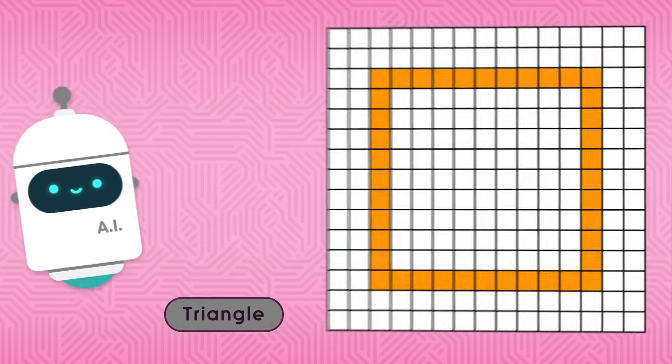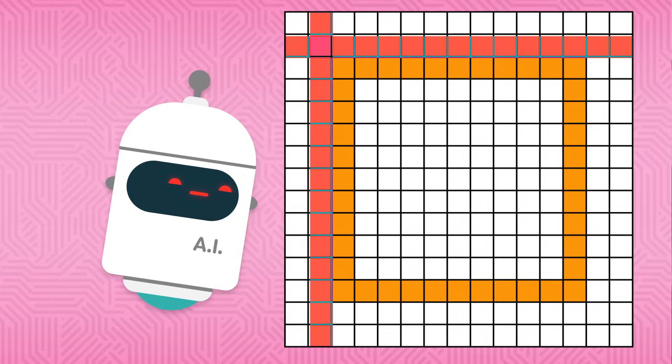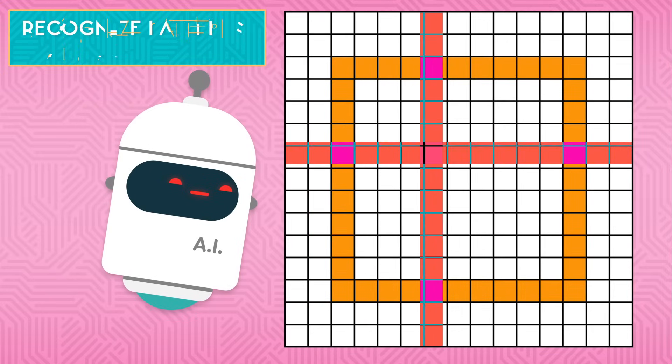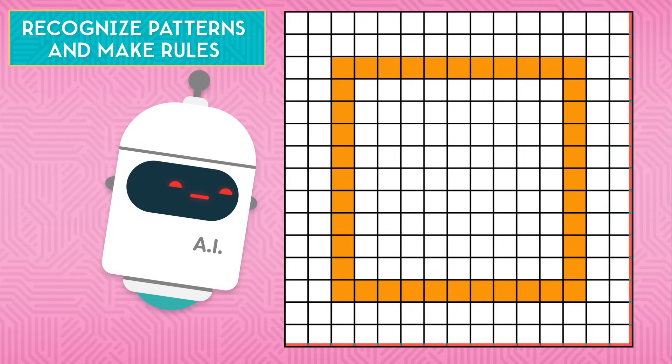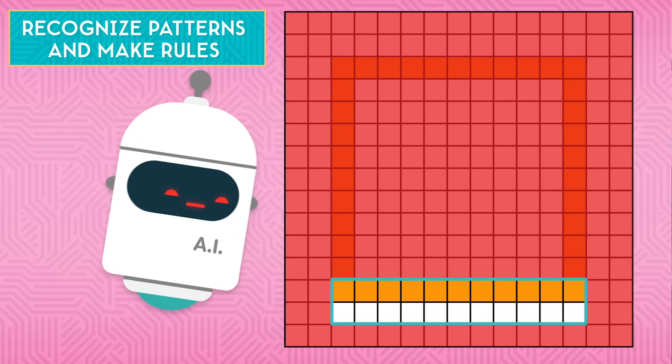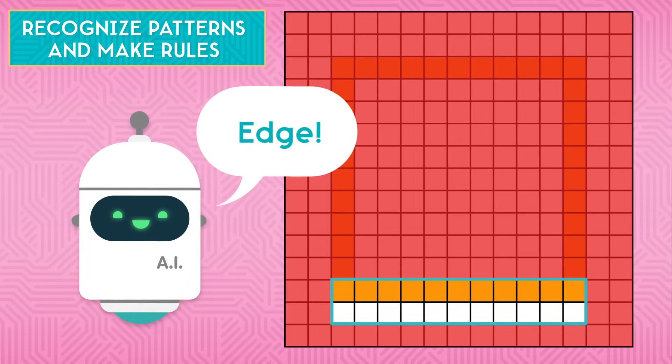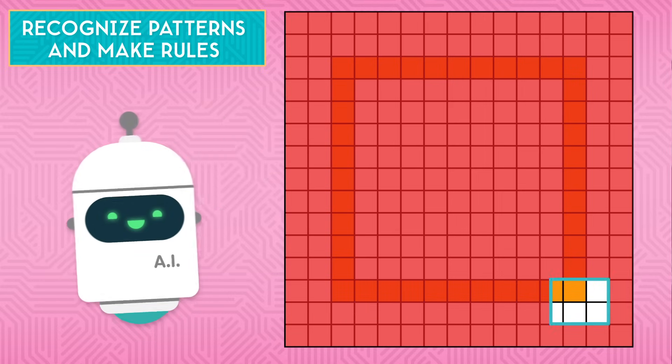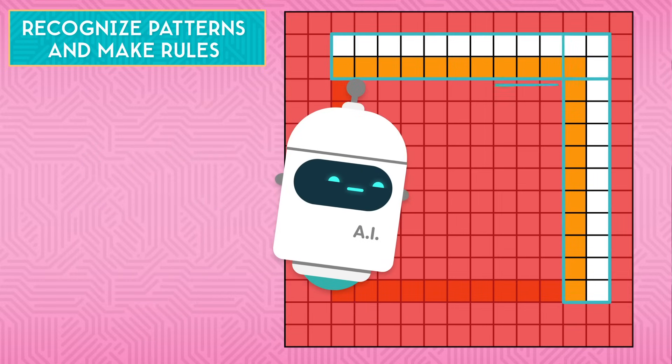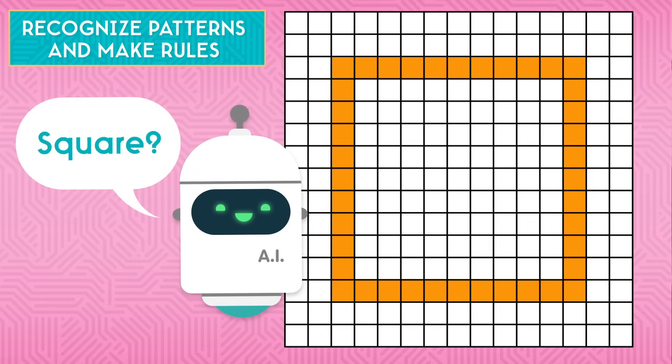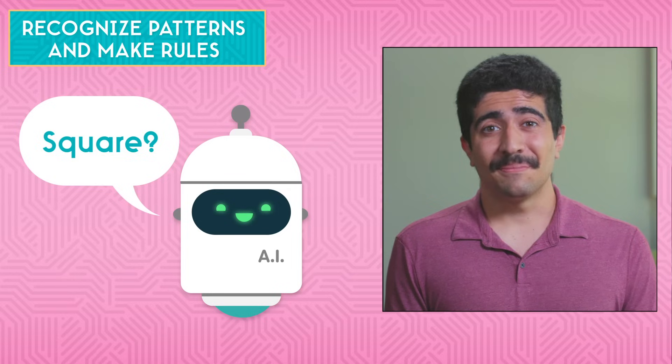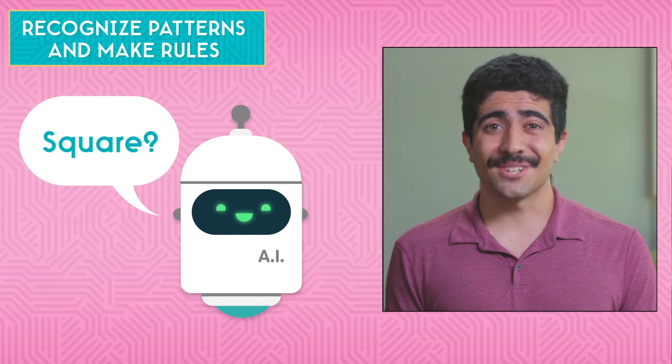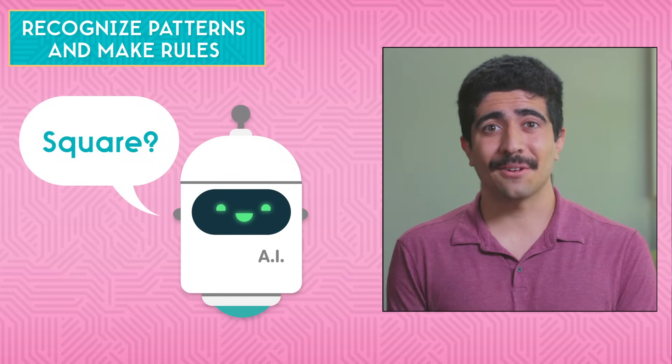With every guess, the computer looks at each pixel and the surrounding pixels. It tries to recognize patterns and make rules to help it guess. Like if it sees a row of orange pixels next to a row of white pixels, there's an edge. If the computer sees two edges oriented a certain way, say a 90-degree angle, then it's likely to guess that it's looking at a square. It won't get it right every time, but with more trial and error, it will slowly build a more confident guessing algorithm.